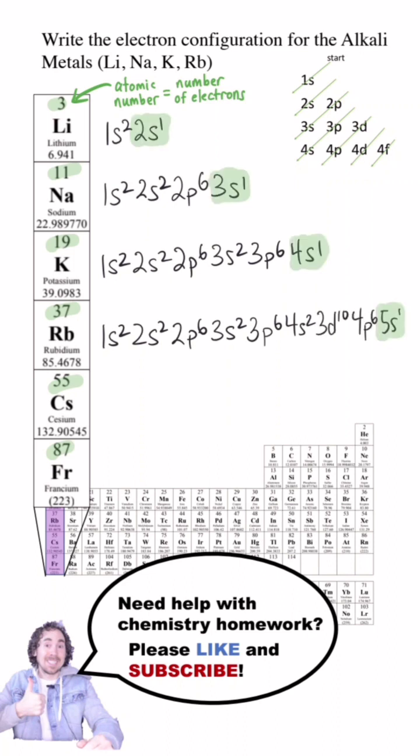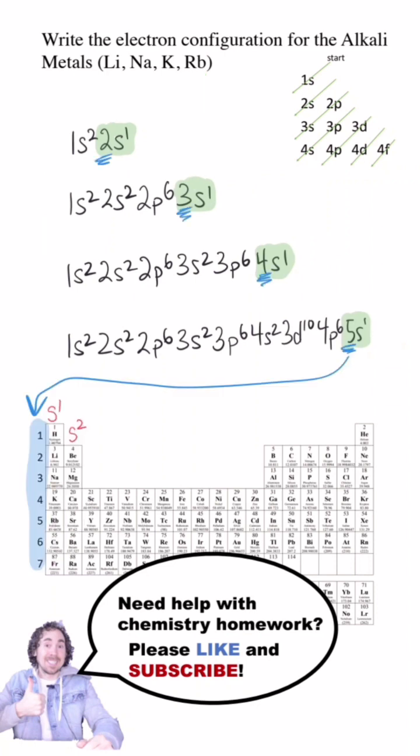The highest occupied energy level is the same with one electron in the S sublevel, and the number in front of that energy level is the row on the periodic table. So what is cesium's highest occupied energy level? Well, it'd be 6s1 because it's in row 6 and in the S1 column.